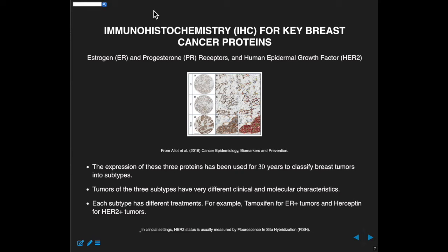For at least 30 years, these three proteins — ER, PR, and HER2 — have been used to basically decide how patients would be treated, because those different subtypes of tumors have really different molecular portraits and require therefore different therapies, different drugs that target different mechanisms in the cell. For example, tamoxifen is an established drug for breast cancer used to target ER positive tumors, and classically Herceptin was used to target HER2 positive tumors. Knowing the subtype of a tumor is really important for treating the individual properly.